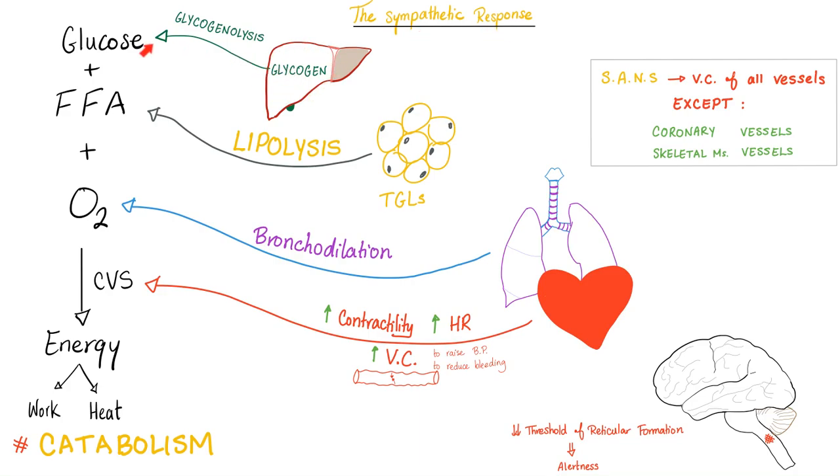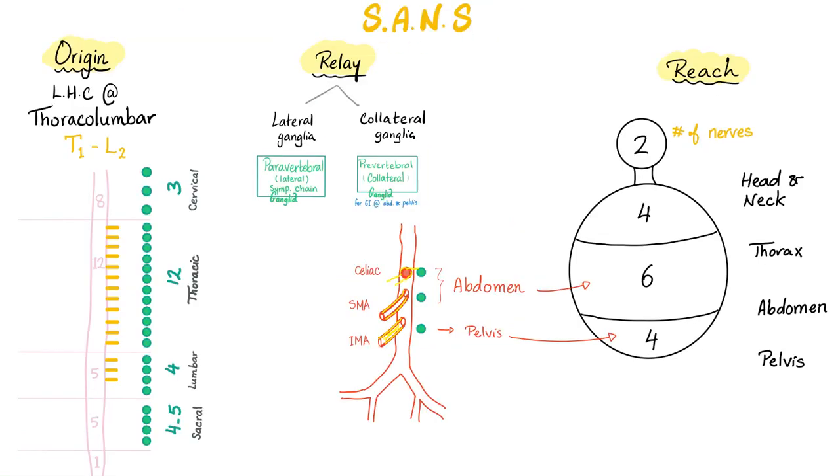Sympathetic response was discussed in the previous video. In a nutshell, we break down glycogen into glucose, a source of energy. We break down lipids into free fatty acid, a source of energy. We get some oxygen by dilating your bronchi. Get me more oxygen. Let's burn this. And the CVS system will help us transport this energy into the cell. Give me some work. Give me some heat. This is a catabolic system. Sympathetic will vasoconstrict all of your vessels except coronary vessels because your heart needs to beat faster and skeletal muscle vessels because you're running from a tiger.